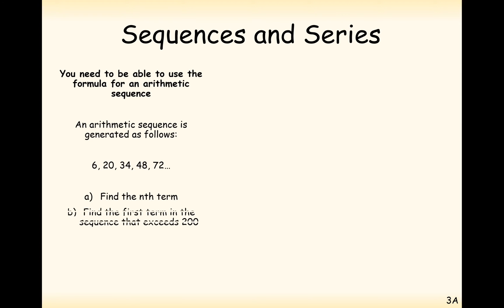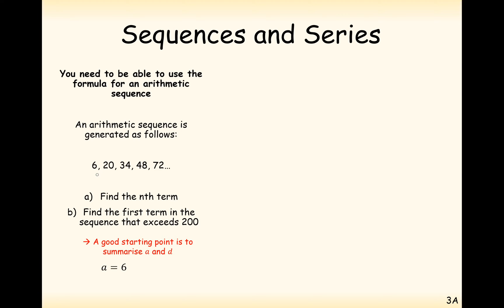Let's have a go at one of these. The question gives us the sequence 6, 20, 34, 48, 72, and part a is to find the nth term — that's finding a plus (n minus 1) lots of d and substituting in a and d. So it's a good idea to start by working out what a and d are.